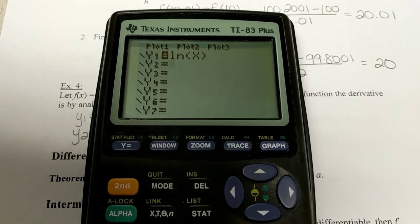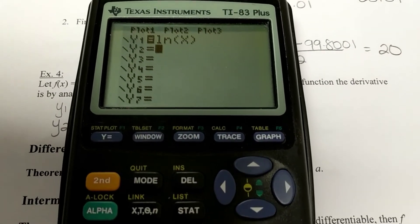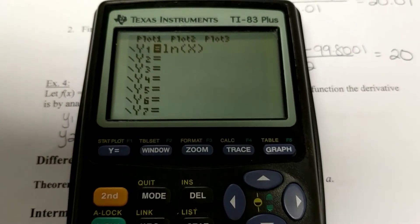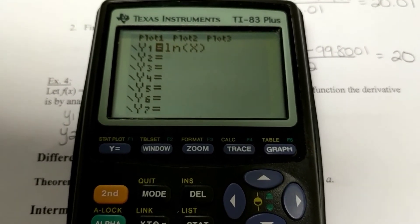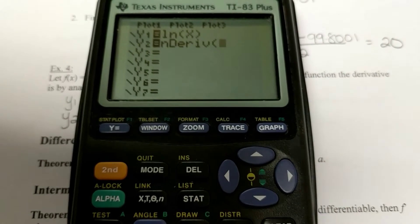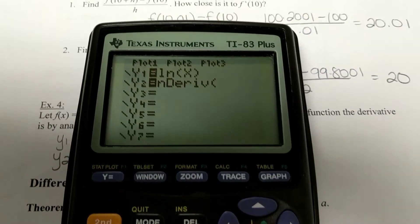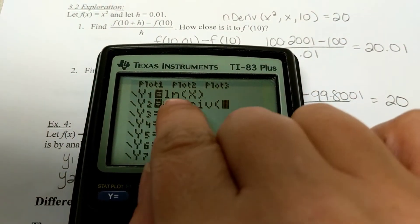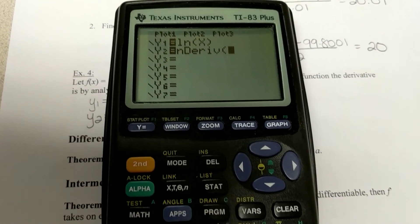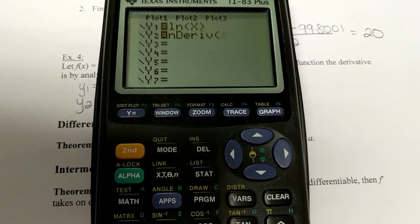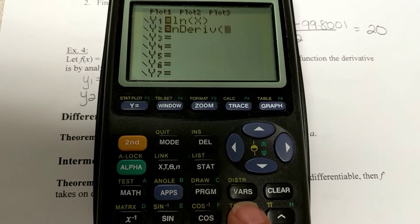Here's how this works. If you go into y equals, you're going to put in your natural log of x. Now, in y2, and this is going to depend on the syntax of your calculator. Mine has that weird syntax. I'm going to go ahead and put in n derivative, which is math 8. And I want it to take the derivative of the function that's in y1. So, in case you didn't know, you can copy and paste on your calculators. To copy and paste, you're going to go to this VARS button.